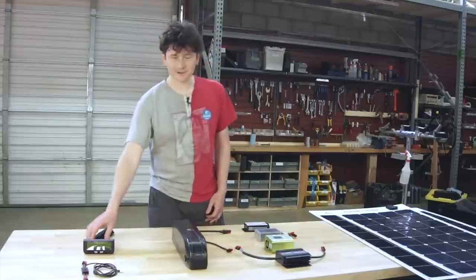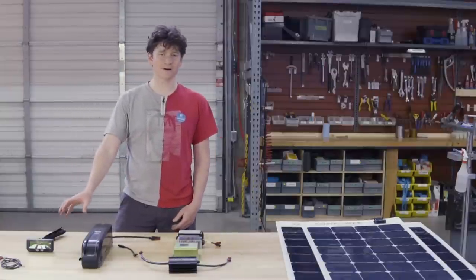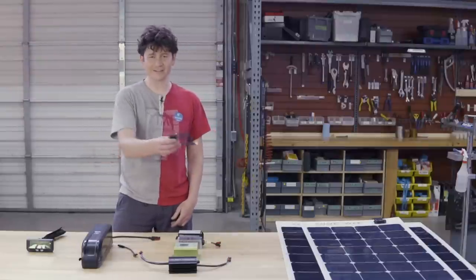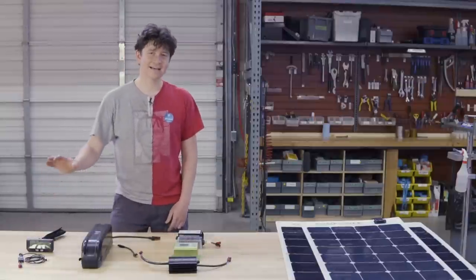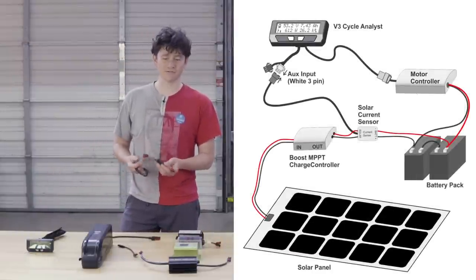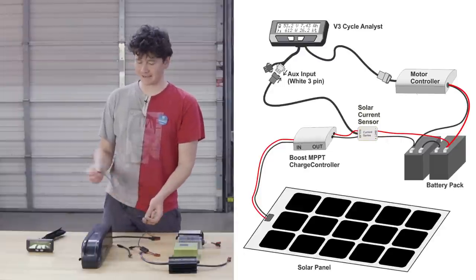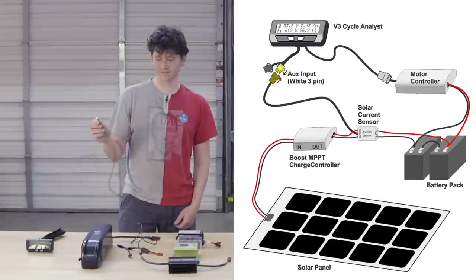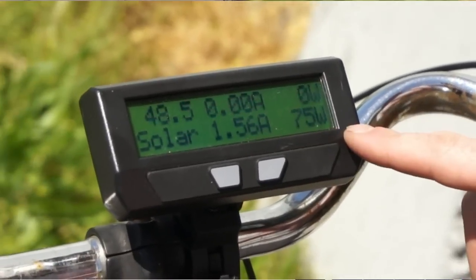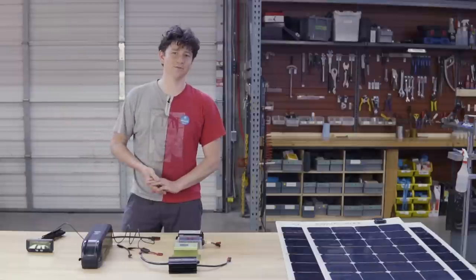If you're a Grin customer you're probably already familiar with our cycle analyst display and what we've done to accommodate interest in solar e-bike systems is created a custom solar firmware for the version 3 cycle analyst and created a separate piece of hardware, a solar current sensor that lets the cycle analyst display also see how many amps are flowing into the battery from the solar panels and it does that independently of measuring how many amps is flowing from the motor controller to the motor. Now you can have a single dashboard where you see all in one place your speed, your power going out, but also the solar watts coming in. You can see in real time as the sun conditions change, if you have a tiltable panel you can change the angle and optimize your ride to get the most solar input.